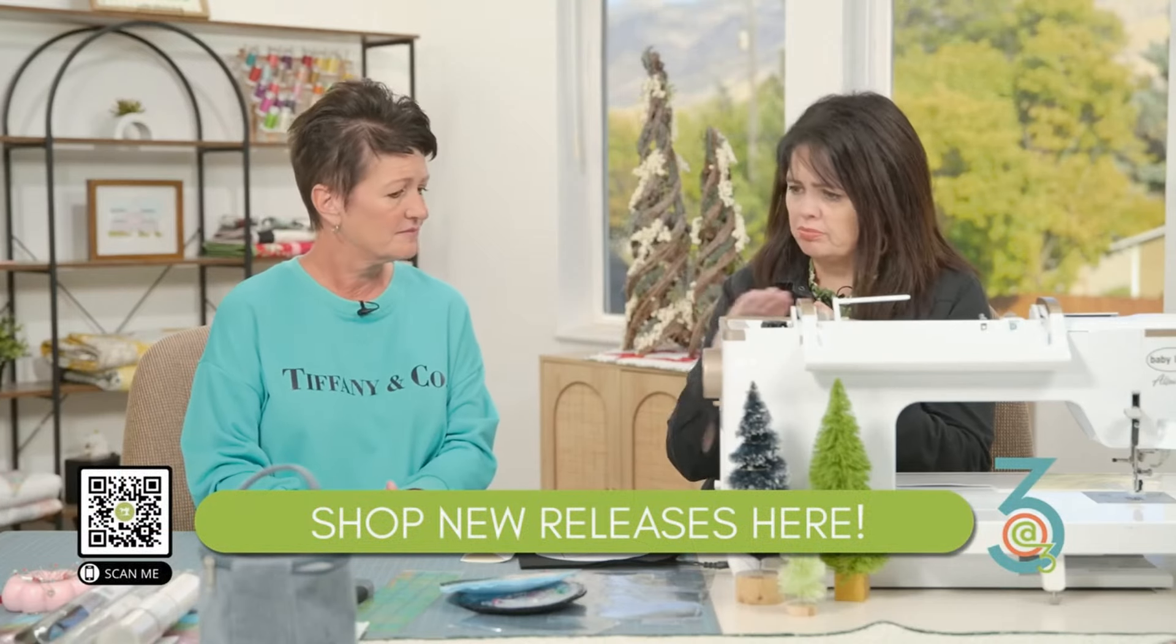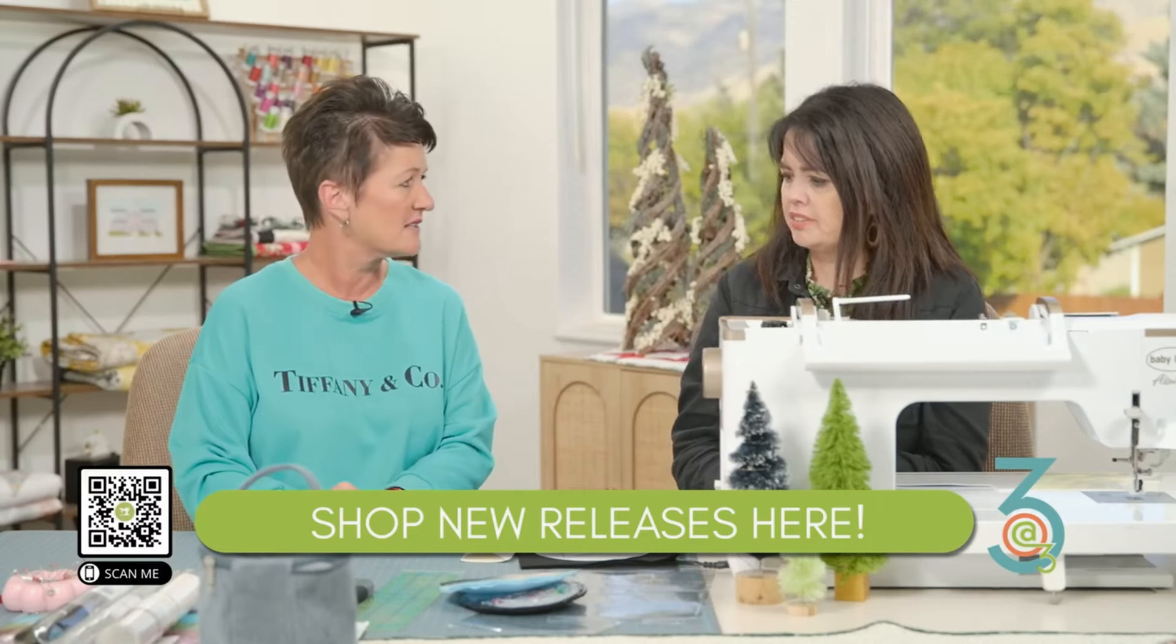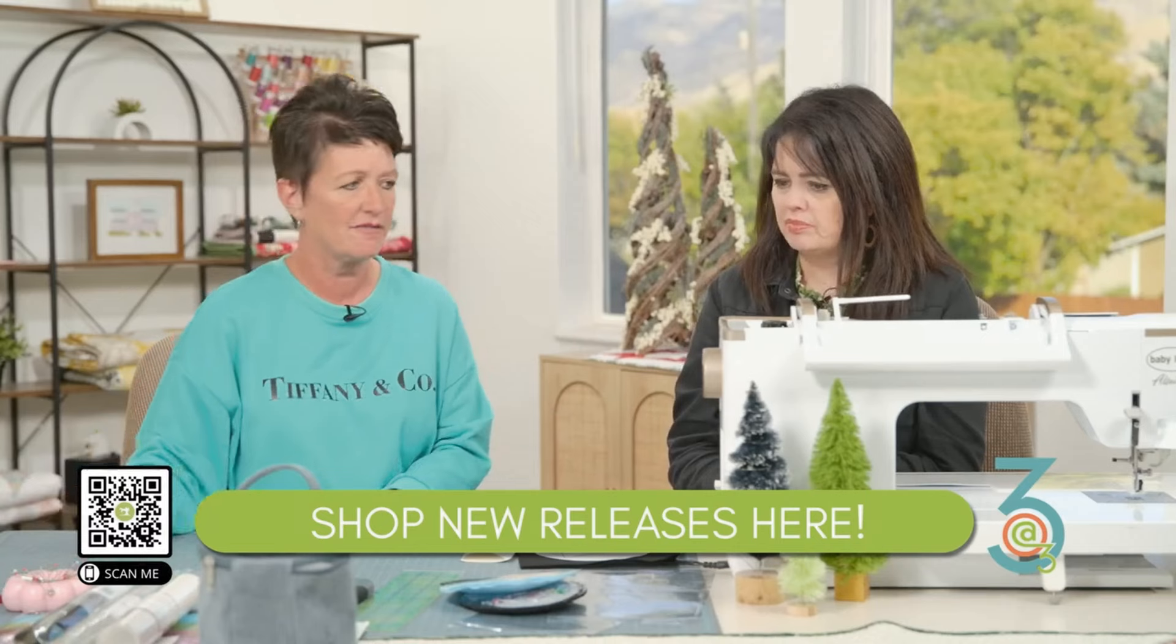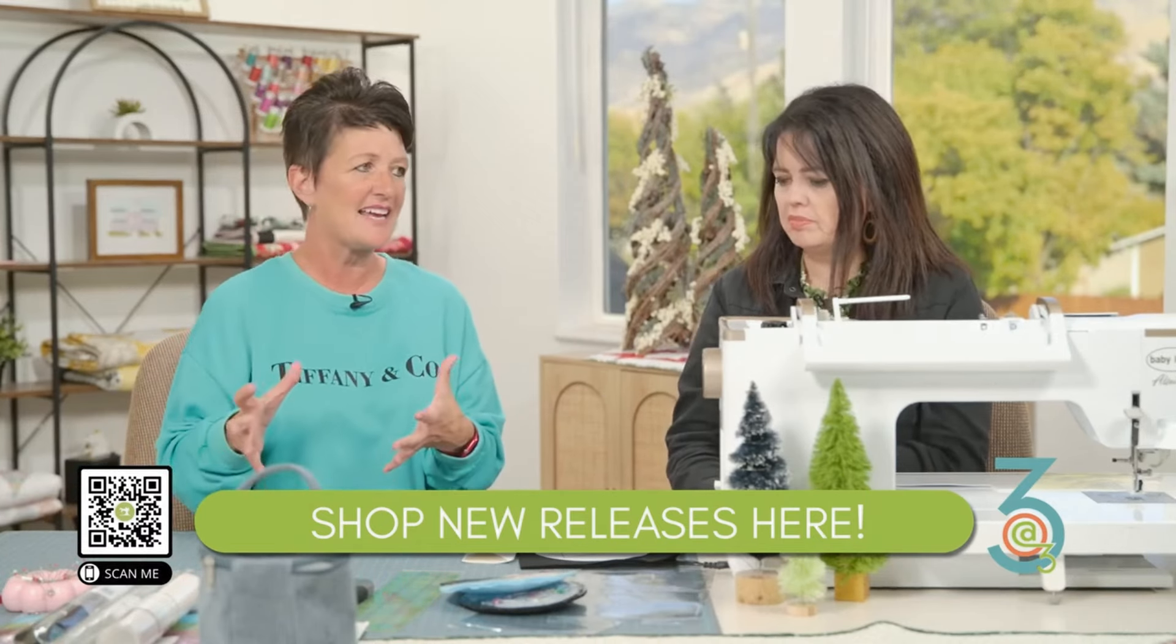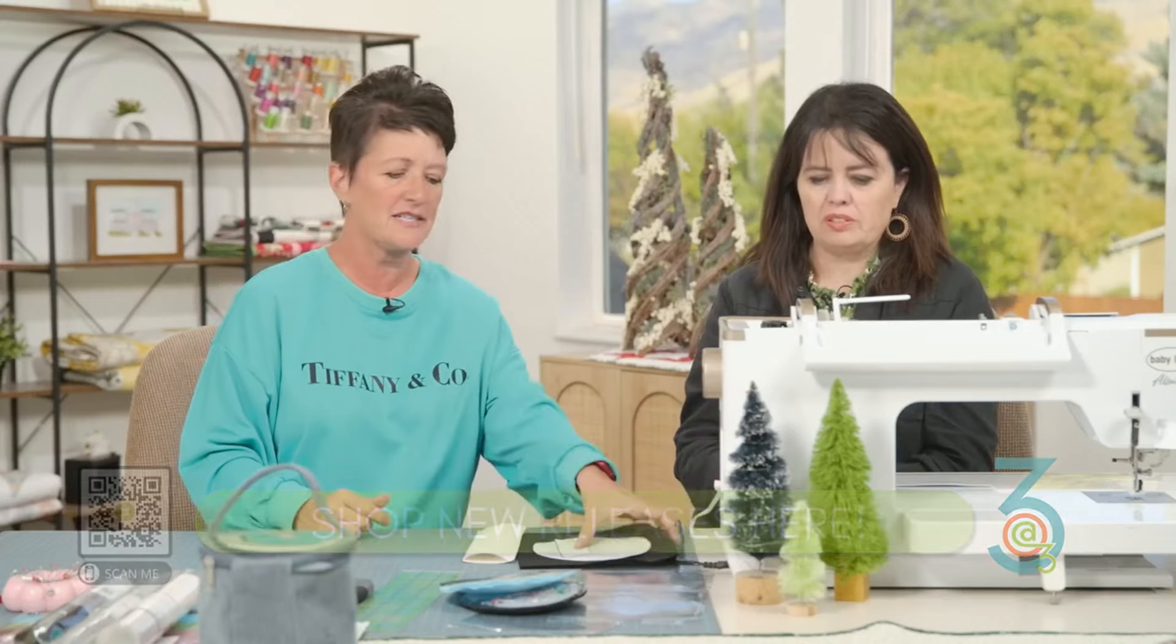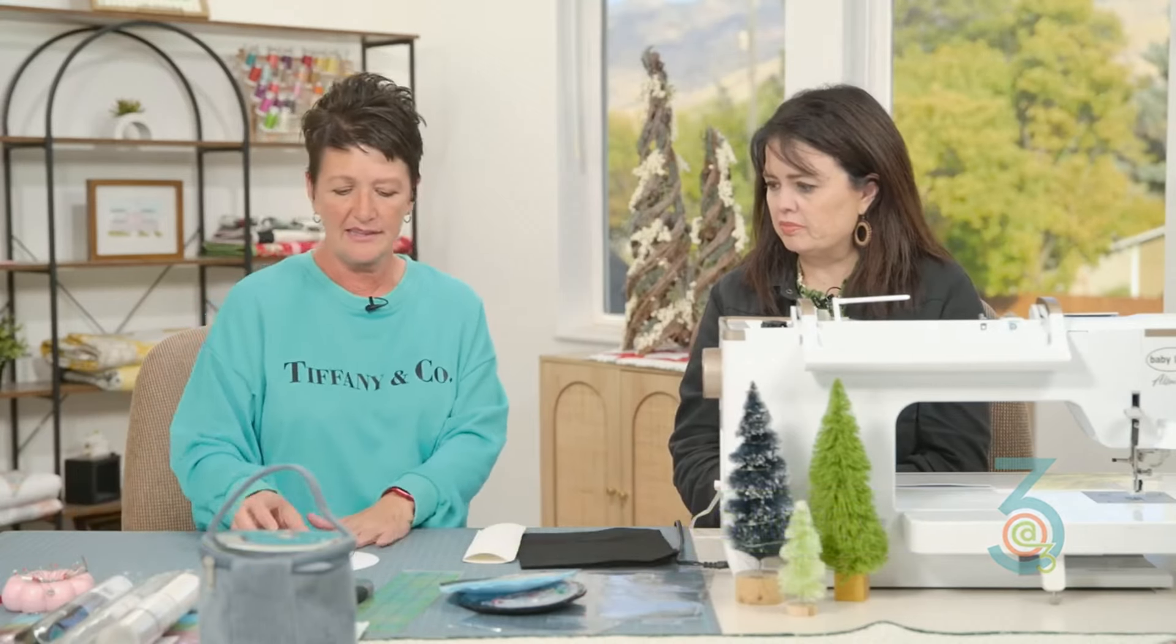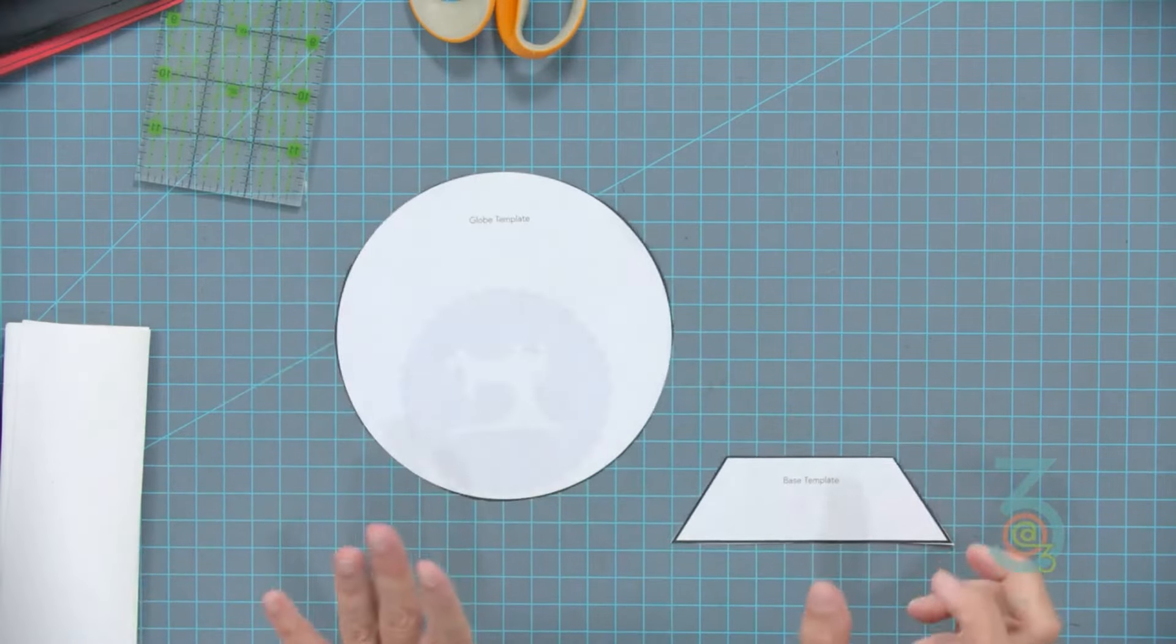You could use it on laminated cotton or pull fabric. The second trick I'm going to say is decrease your stitch size. I decreased it down to 2.0, you could go even a little bit smaller. We put the template in the pattern under new releases. It's really just two pieces: you've got your globe template and your base template.